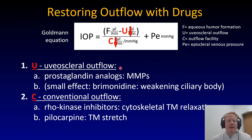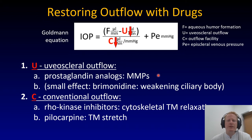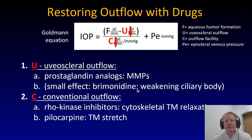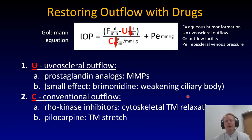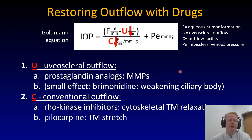Uveoscleral outflow-enhancing drugs are of course prostaglandin analogues — they upregulate matrix metalloproteinases, which break down the extracellular matrix. Brimonidine also increases uveoscleral outflow, but not very much. It's probably just because it weakens the ciliary body, which improves outflow. No enzyme or set of enzymes, as far as I'm aware, has been shown to be upregulated by brimonidine. So it's probably an indirect effect.